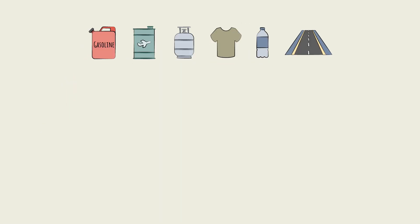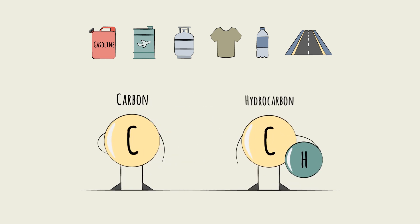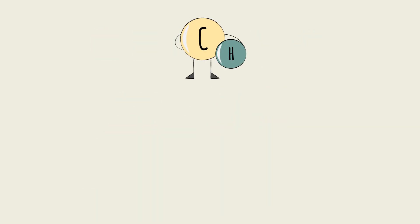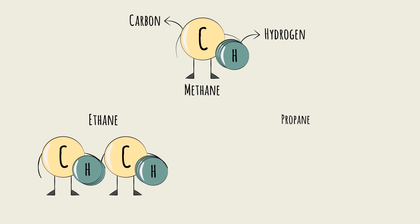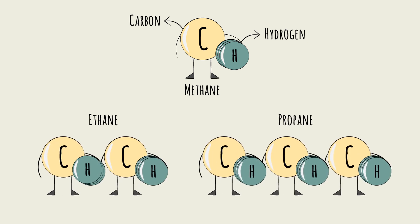The one big thing—well, very tiny thing—these products have in common is carbon, and in particular hydrocarbon molecules. Hydrocarbons contain both hydrogen and carbon atoms and can come in thousands of different sizes and configurations, like methane, which contains only one carbon, ethane, which has two, propane, which has three, and so on.